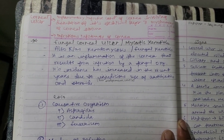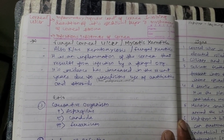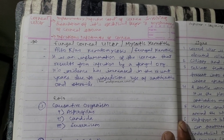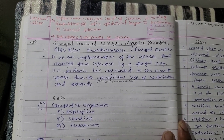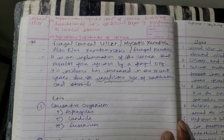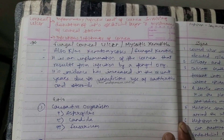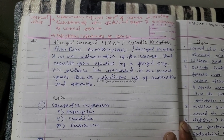What is a corneal ulcer? It is an inflammatory, infective condition of the cornea involving disruption of its epithelial layer with involvement of the corneal stroma.